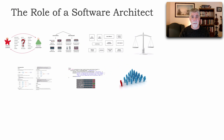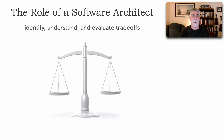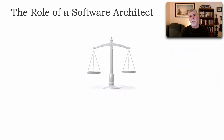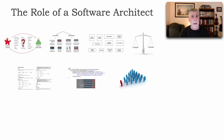Perhaps one of the most important things an architect does is to identify, understand, and evaluate trade-offs. This is so important that Neil Ford and I, in our book Fundamentals of Software Architecture, coined the first law of software architecture: everything in software architecture is a trade-off. It's up to us as architects to identify what these trade-offs are and analyze them to make good decisions. In lesson 90, part 5 of becoming a software architect, I talk about three different techniques for analyzing trade-offs.